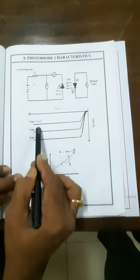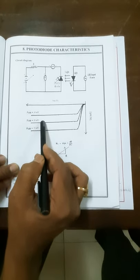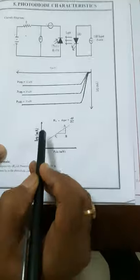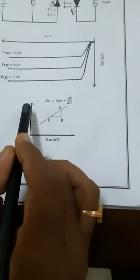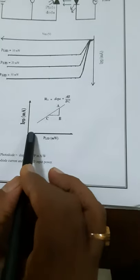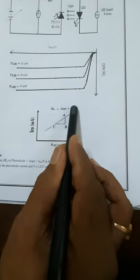Power of an LED 10, 20 as well as 30, you are going to get very easily. Similarly, we are having the values for the responsivity. IPD should be taken in the positive y-axis as well as the power of an LED should be taken along x-axis. If you plot a graph, 100% you are going to get a straight line.